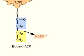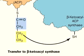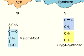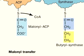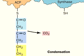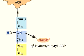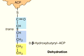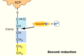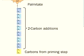In this way, additional 2-carbon units deriving from malonyl-CoA are added to the growing acyl chain. Remember, 2 carbons come from the priming step, so 7 cycles of 2-carbon additions are needed to make a 16-carbon palmitate molecule. This is an example.